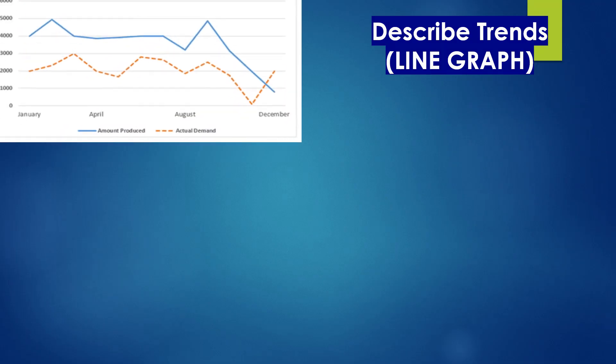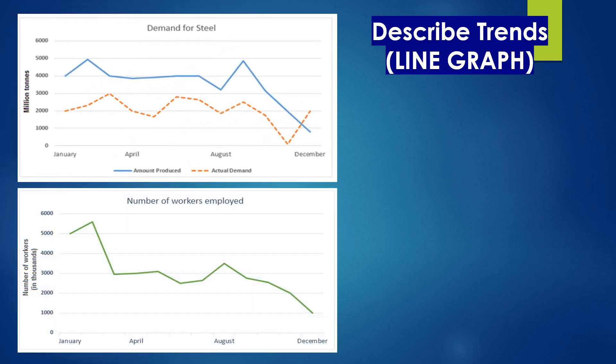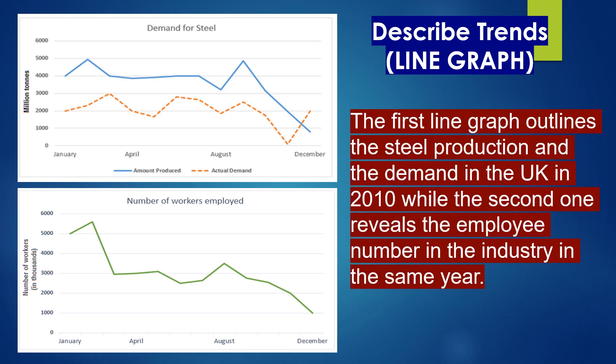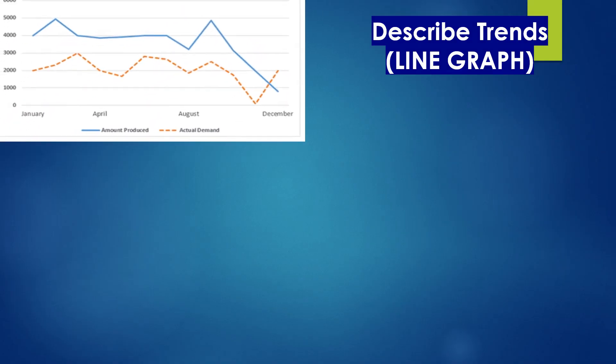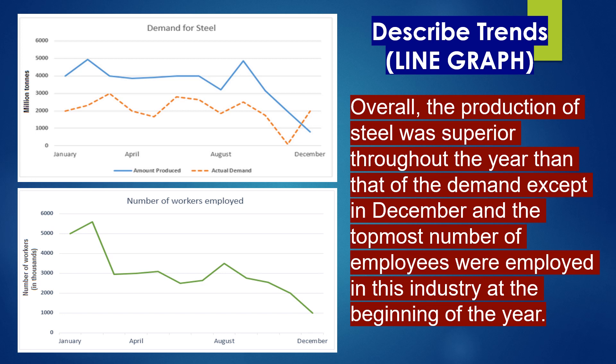Let me share an ideal answer that can help you score a good band. Here we have two different line graphs. The first one is demand for steel and the second is number of workers employed. The first line graph outlines the steel production and demand in the UK in 2010, while the second one reveals the employee number in the industry in the same year. Overall, the production of steel was superior throughout the year than that of the demand except in December, and the topmost number of employees were employed in this industry at the beginning of the year.